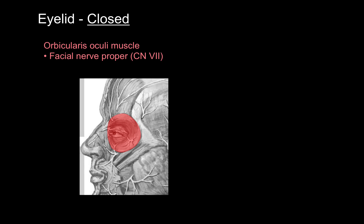Let's talk about orbital anatomy. Here's a picture of a lateral view of the face with the eyelid closed. The orbicularis oculi muscle, a muscle of facial expression, is a sphincter muscle. It's a circular muscle that surrounds the orbit and the eyelid, or palpebral. It's innervated by the facial nerve, cranial nerve number seven, the same nerve that innervates your platysma muscle, and its function is to close your eye tight.